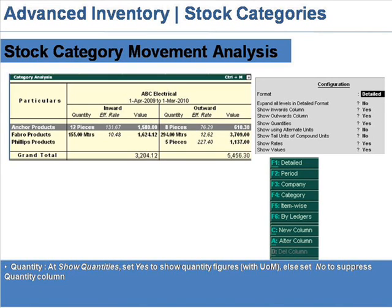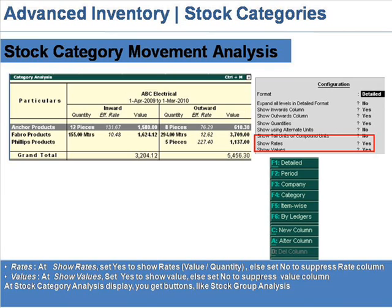At Quantity, set Yes to show quantity figures, else set No to suppress the quantity column. At Rates, set Yes to show rates (value by quantity), else set No to suppress the rate column. At Values, set Yes to show value, else set No to suppress the value column.